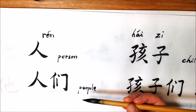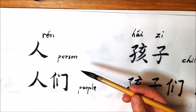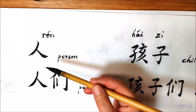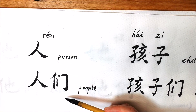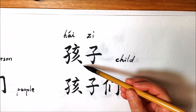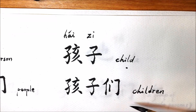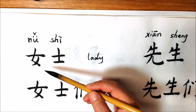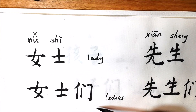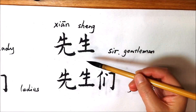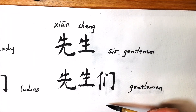Second, it can change the singular noun into plural. For example, 人 means person, 人们 means people. 孩子 means child, 孩子们 means children. 女士 means lady, 女士们 means ladies. 先生 means sir or gentleman, 先生们 means gentlemen.